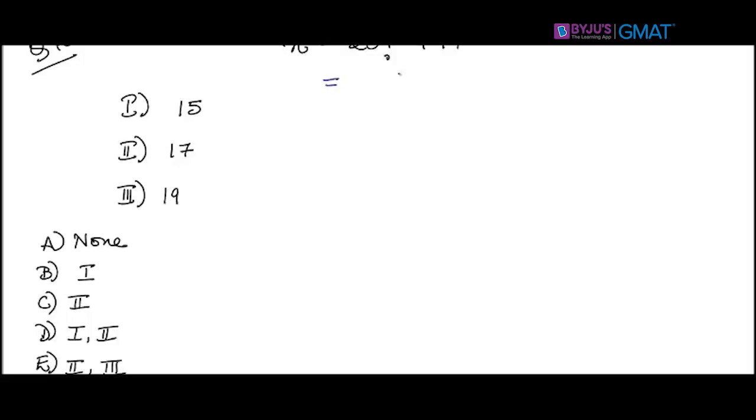If you look at 20 factorial, it can be written as 20 × 19 × 18 × 17 × 16! plus 17. I can definitely take 17 common, so this becomes 17[20 × 19 × 18 × 16! + 1].